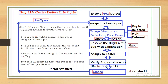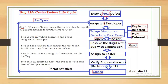Diagrammatically, the bug life cycle works as follows: First, whenever a tester finds a bug in the software, they log the bug in a bug tracking tool like JIRA or Quality Center with the status 'New.' After that, a bug ID is generated by the tool and the bug is assigned to developers.